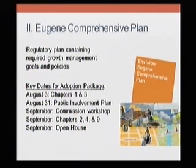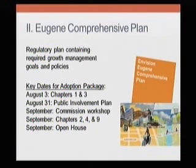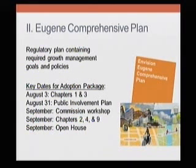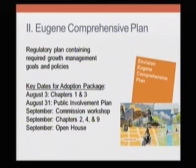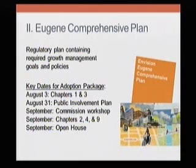The sequence will cover chapters two, four, and nine before the commission workshop. Drafts will be available but won't be ready to bring to the full commission until later in September. Later in September, the commission will review chapters two, four, and nine — compact development, housing, and administration/implementation. An update on the transportation chapter from public works, which runs parallel to Envision Eugene, is also hoped to be scheduled.